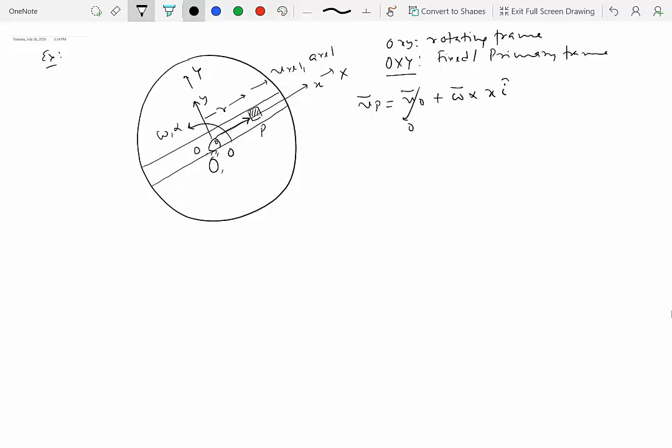Notice how this is a small i hat, lowercase i hat, that indicates this is a unit vector along the small x direction plus V relative. So this is omega k cross X i hat and V relative is some magnitude and its direction is positive i hat. So this becomes omega X j hat plus V relative i hat.